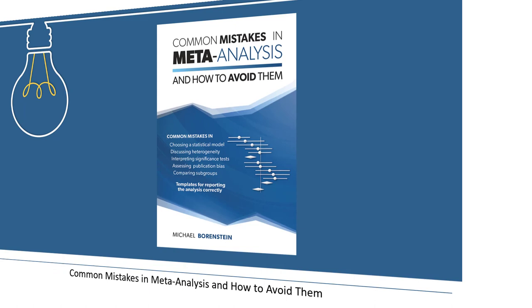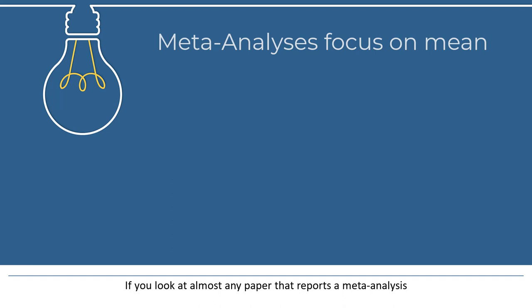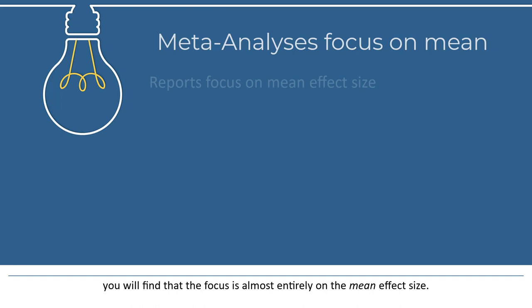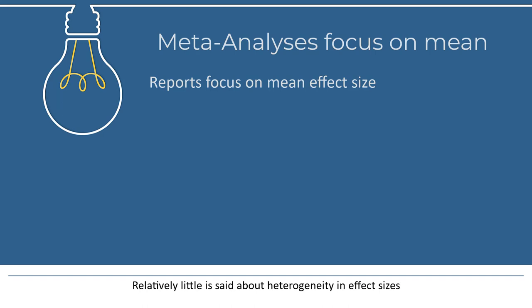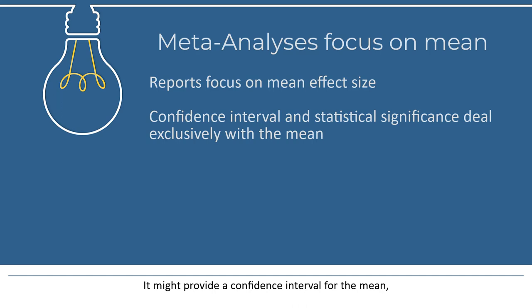If you look at almost any paper that reports a meta-analysis, you'll find that the focus is almost entirely on the mean effect size. Relatively little is said about heterogeneity in effect sizes. For example, the paper might report that the mean effect size is 0.50, provide a confidence interval for the mean, and tell us that the mean is or is not statistically significant.